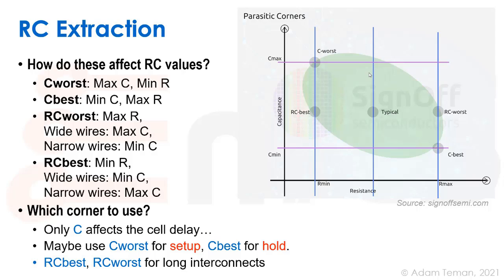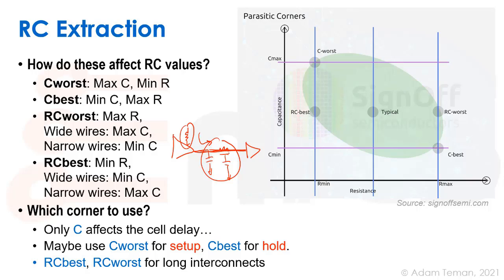For delay calculation, we must choose one extraction corner to use with each process corner. One option is to use only capacitance, since capacitance is what affects cell delay — the on-resistance of a standard cell gate sees the load as a lumped capacitance. However, for long wires where wire delay is significant, we should use RC-best or RC-worst extraction. There's no single right answer; it's a methodology choice, and trying a few different extractions is recommended if computation time allows.